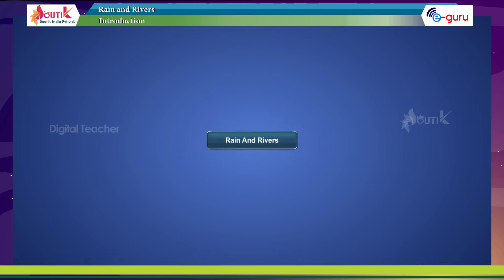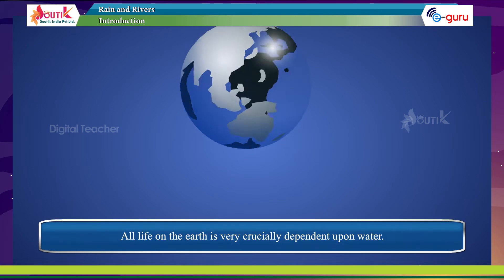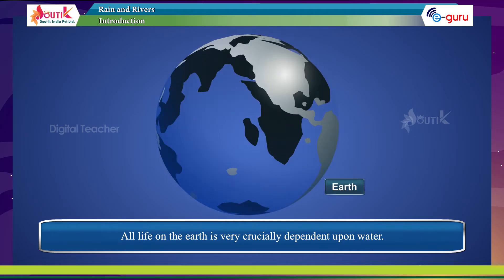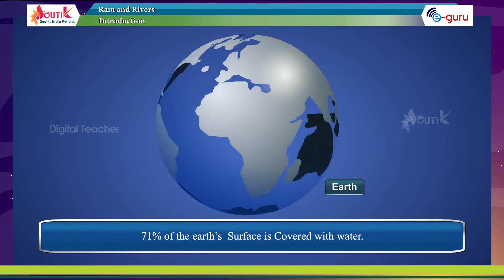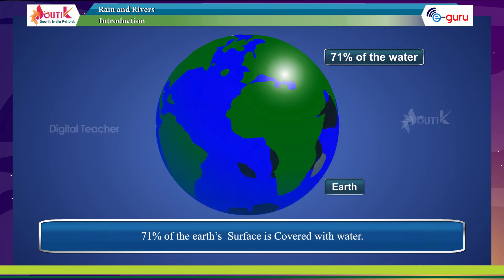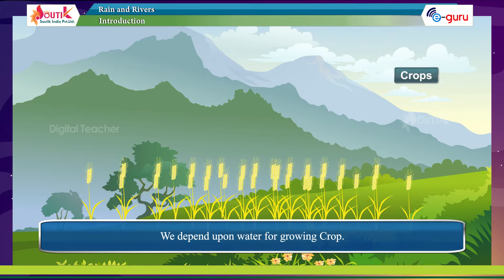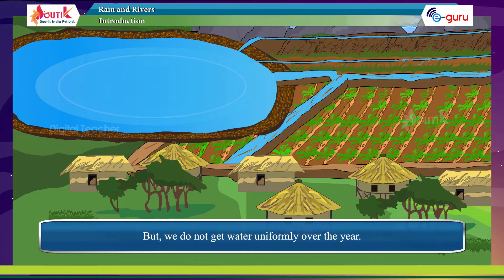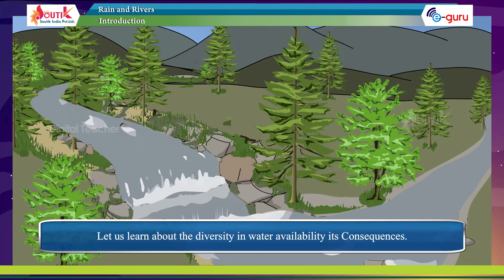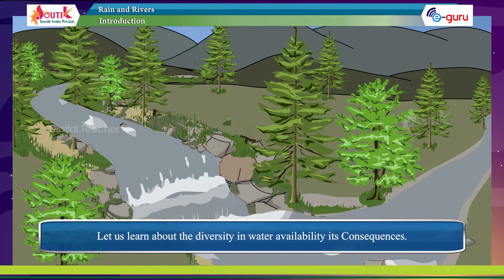Rain and rivers — all life on the earth is very crucially dependent upon water. Seventy-one percent of the earth's surface is covered with water. We depend upon water for growing crops, but we do not get water uniformly over the year. Let us learn about the diversity in water availability and its consequences.